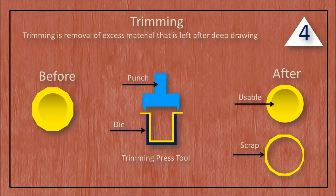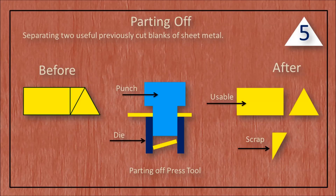Trimming is the removal of excess material that is left after deep drawing. Parting off is the process of separating two useful previously cut blanks of sheet metal.